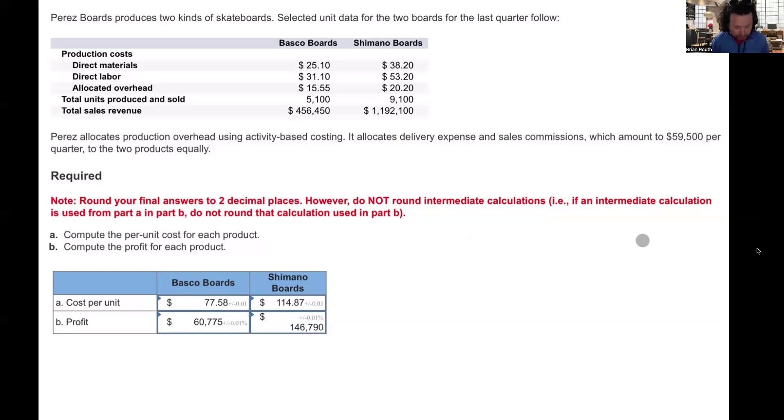In this problem, Pereira Boards produces two kinds of skateboards. Selected unit data for the two boards for the last quarter follow. So in this problem, they give us all our production costs: our direct materials, direct labor, and allocated overhead for each product. They tell us the total units produced and sold, and they tell us the total sales revenue for each product. Pereira allocates production overhead using activity-based costing. It allocates delivery expense and sales commissions, which amount to $59,500 per quarter, to the two products equally.